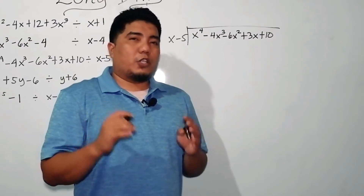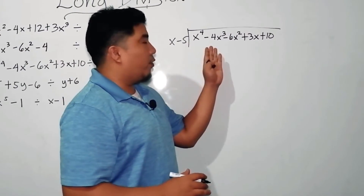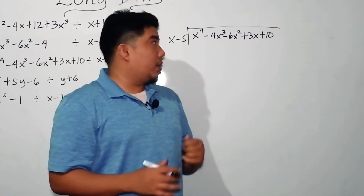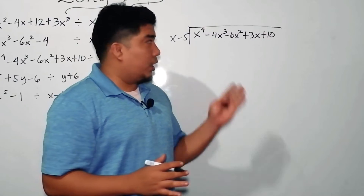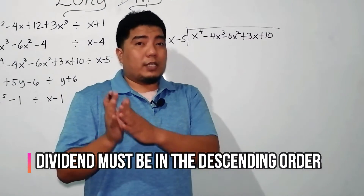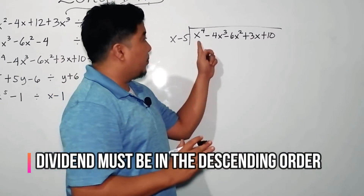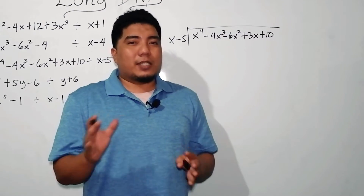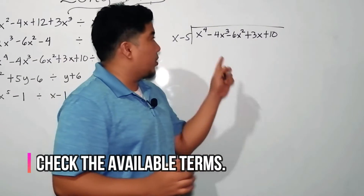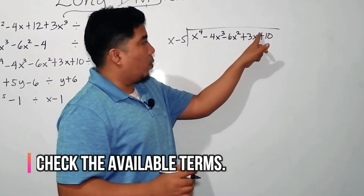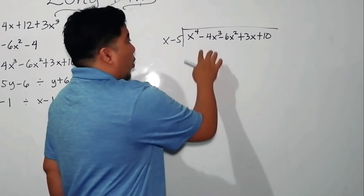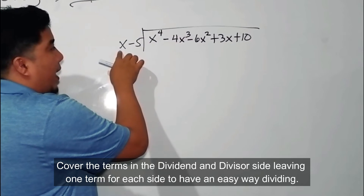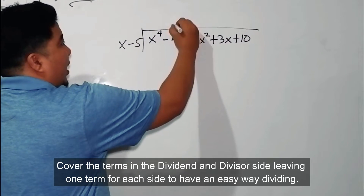Now let us go to the third example: x to the fourth minus 4x cubed minus 6x squared plus 3x plus 10, divided by x minus 5. The first thing you should do is check whether your dividend is arranged from highest to lowest exponent — it is. Next, check whether there are missing terms: 4, 3, 2, 1, and 0 — all terms are available. So we proceed to the division. x to the fourth divided by x gives x cubed.